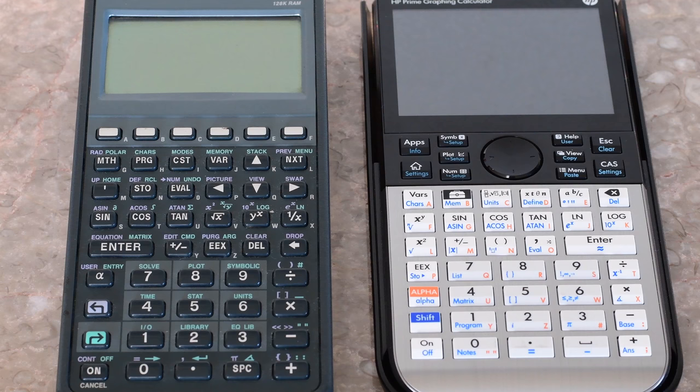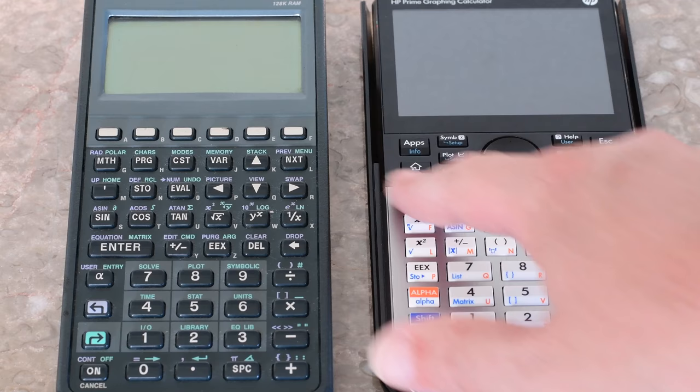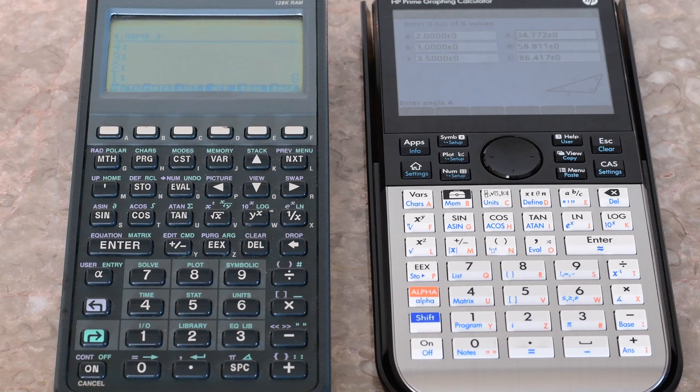You can see the key layouts of the two, which you can see plenty of other places. You have one more row of functions on the 48 GX, but up here you have a four-way cursor and some other keys that interact with the Prime.